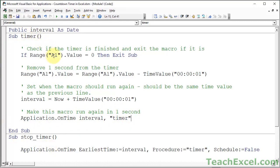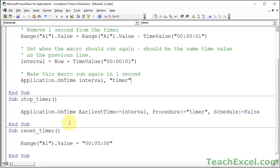Check if it equals zero or not. Doesn't equal zero. Go down here. Remove one second. Go down here. Update the interval to be now plus one second. Go down here. Run the macro again. And we'll keep going and going until we get to zero or until we run stop timer.